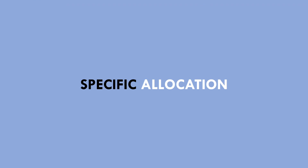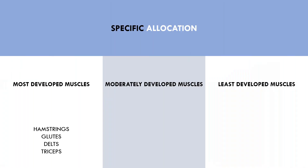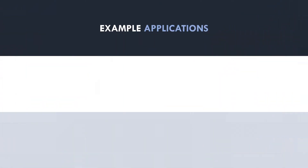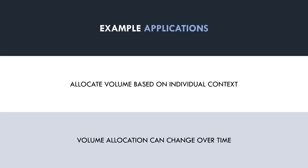For this last example, we will distribute volume based on the specific strengths and weaknesses of an example trainee. Let's say this trainee's most developed muscle groups are the hamstrings, glutes, delts and triceps; moderately developed are their chest, back and quads; and the weakest in comparison are the biceps and calves. We allocate volume to emphasize the less developed muscles: 12 sets for the chest, back and quads; eight sets for the hamstrings and glutes; four direct sets for the delts; 12 direct sets for the biceps; four direct sets for the triceps; and 12 direct sets for the calves. Ultimately, each individual should adjust their volume based on individual context, and this allocation can change over time based on how the trainee is developing and responding to the training protocol.